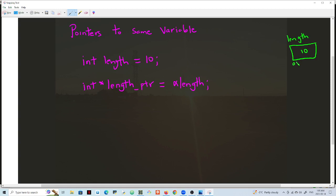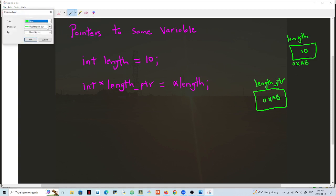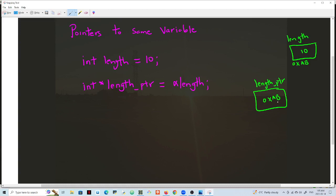So you will have a pointer here called length_ptr which will hold 0xAB. So we have this pointer here that points here.